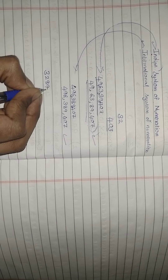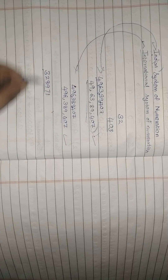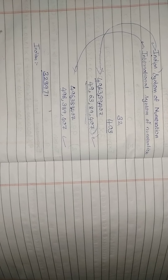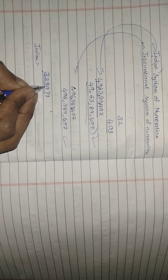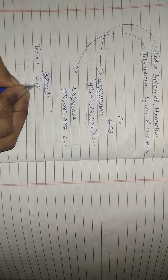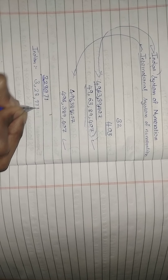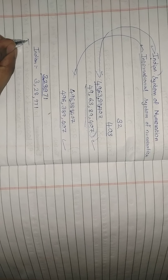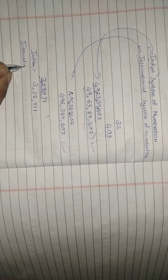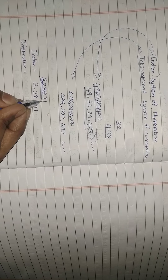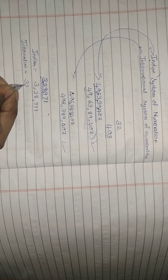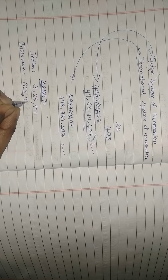Now I will write another number — try to place the commas. For the Indian system: one, two, three — comma — one, two — comma. So it would be 3,28,971. For the International system: one, two, three — comma — one, two, three — comma. So it would be 328,971.